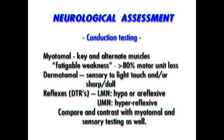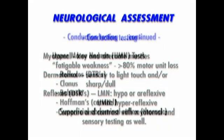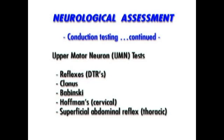Upon completion of testing for lower motor neuron involvement, upper motor neuron clearance is next. Reflex testing has already been performed and a hyperreflexive state would be revealed with DTRs. Clonus or Babinski signs for all scans, Hoffman signs in the cervical scan, and the superficial abdominal cutaneous reflex in the thoracic scan are used as well, and we'll revisit these in detail with each region-specific scan.